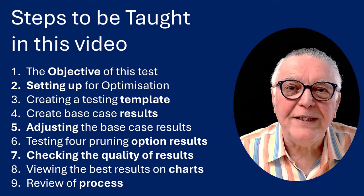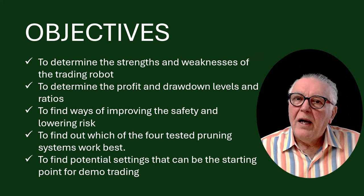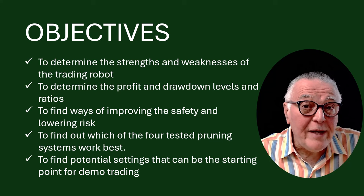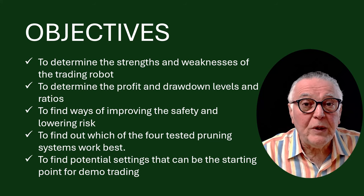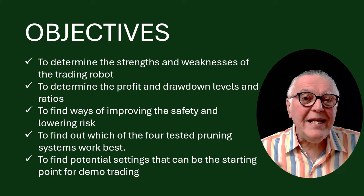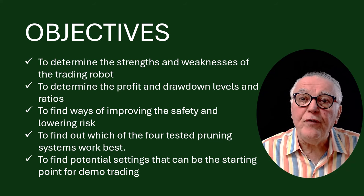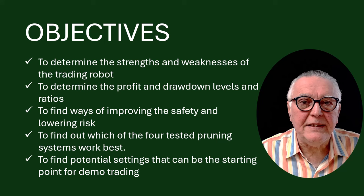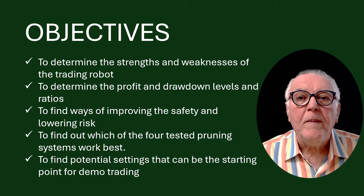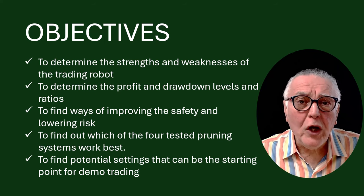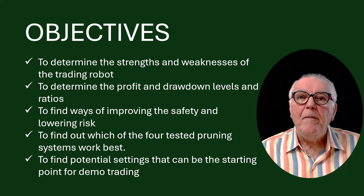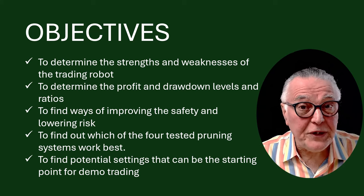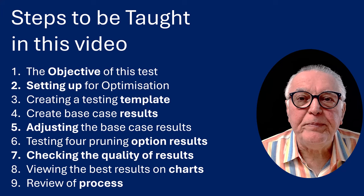Let's start with the objectives of testing. Firstly, I always test to determine the strengths and weaknesses of the trading robot, then look at profit and drawdown levels and ratios because that gives me a feel of the risks involved. It teaches me about the robot — the challenge is to find ways to reduce risk and improve profitability. Specifically for this test, I want to find out which of the four pruning methods is the most efficient, and lastly find potential settings to put into demo accounts.